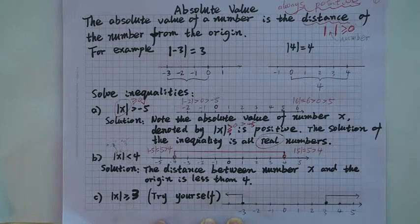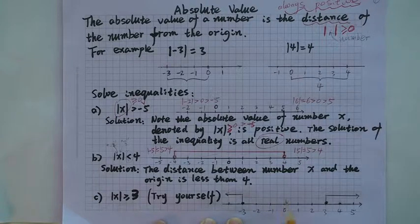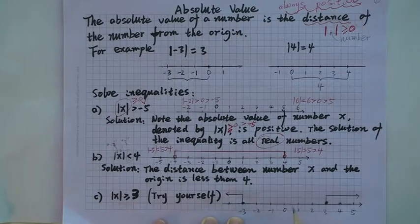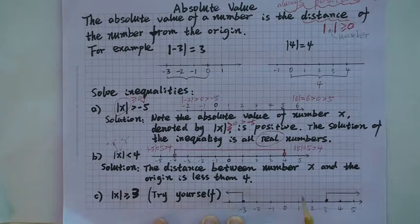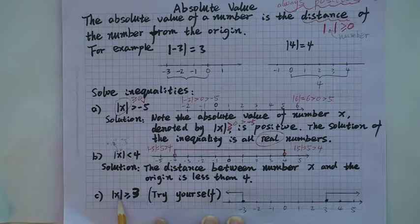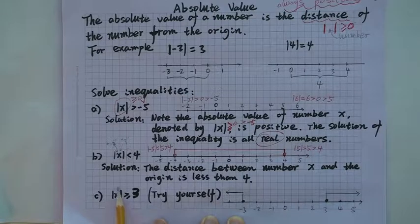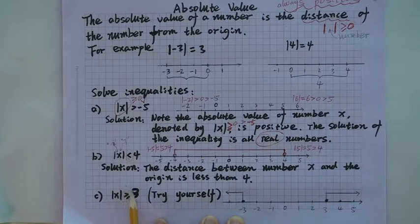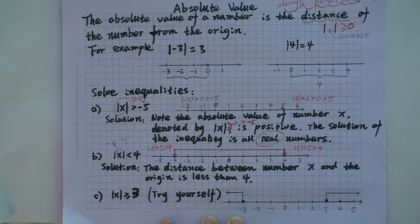I can explain a little bit. If you plug in negative 1, the absolute value of negative 1 is positive 1. One is less than 3, so it is not greater than or equal to 3 — negative 1 is not included. How about zero? The absolute value of zero is zero, and zero is not greater than or equal to 3; zero is less than 3.